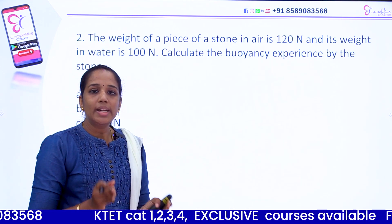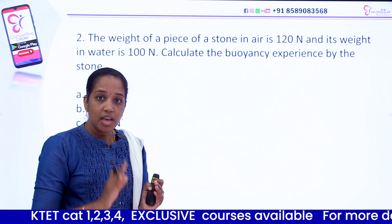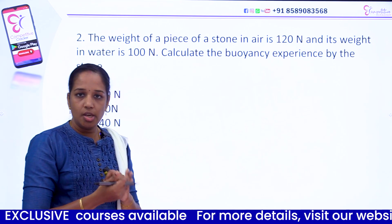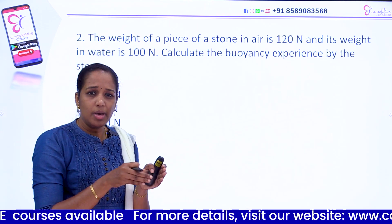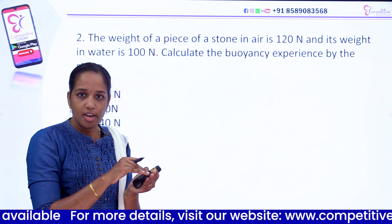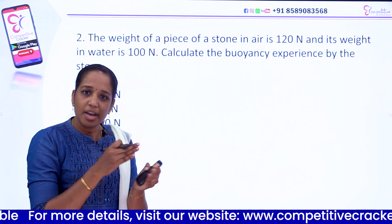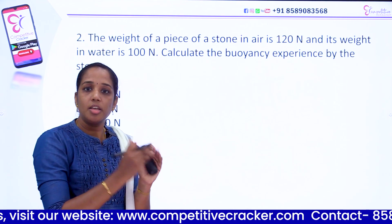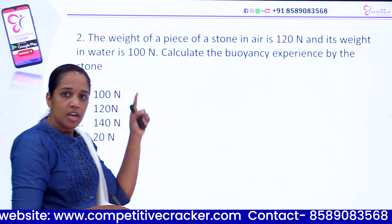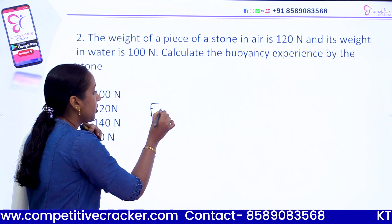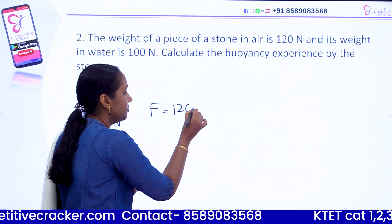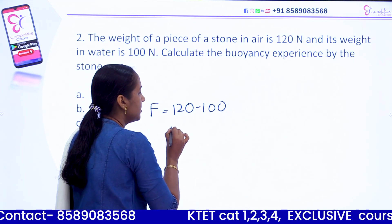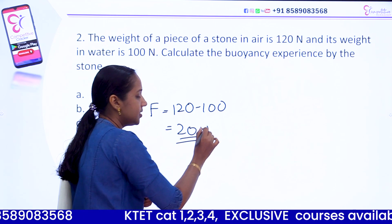Buoyancy is the upward force experienced by an object in a fluid. The formula is: Buoyancy = Weight in air minus Weight in liquid. Weight in air is 120 newtons and weight in water is 100 newtons. So buoyancy = 120 minus 100 = 20 newtons.